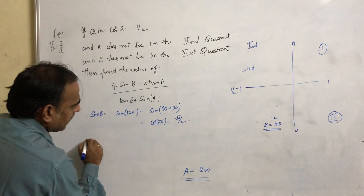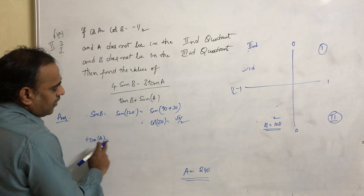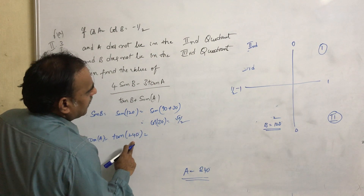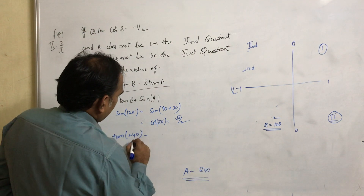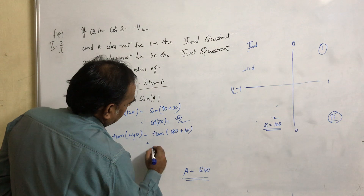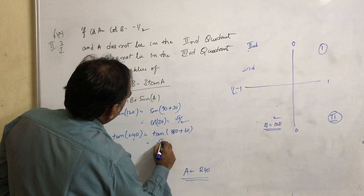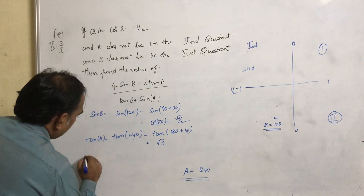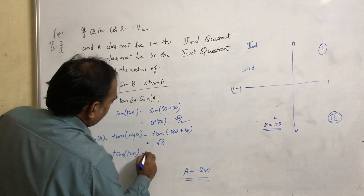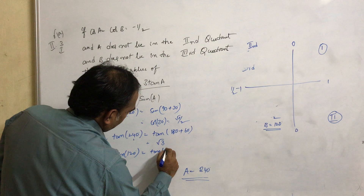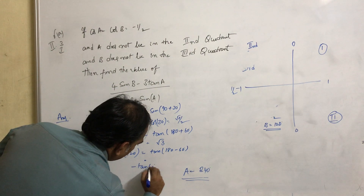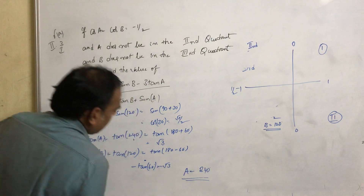Now take tan a. A equals 240. Tan 240 is in the third quadrant. Tan 240 can be written as tan(180 + 60), which equals tan 60 equals root 3. Now compute tan b. Tan b equals tan 120 equals tan(180 minus 60), which equals minus tan 60 equals minus root 3.